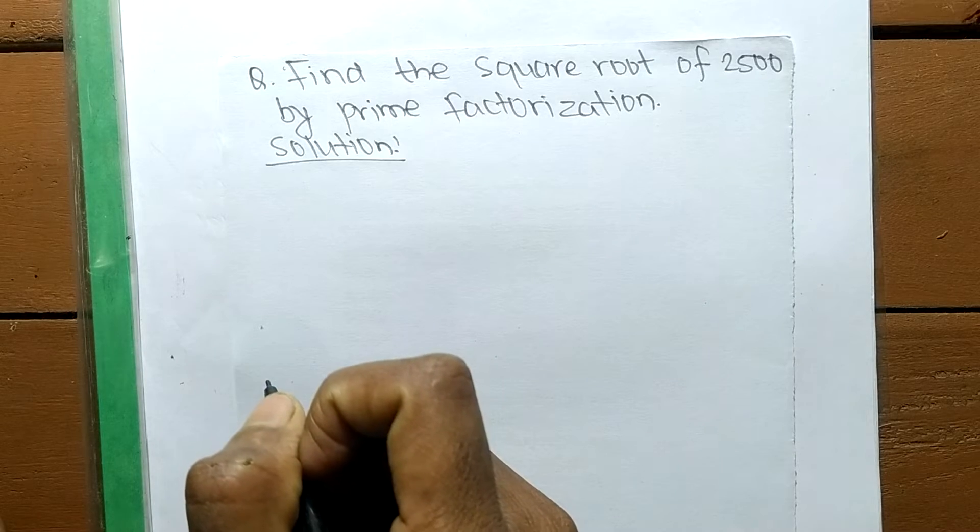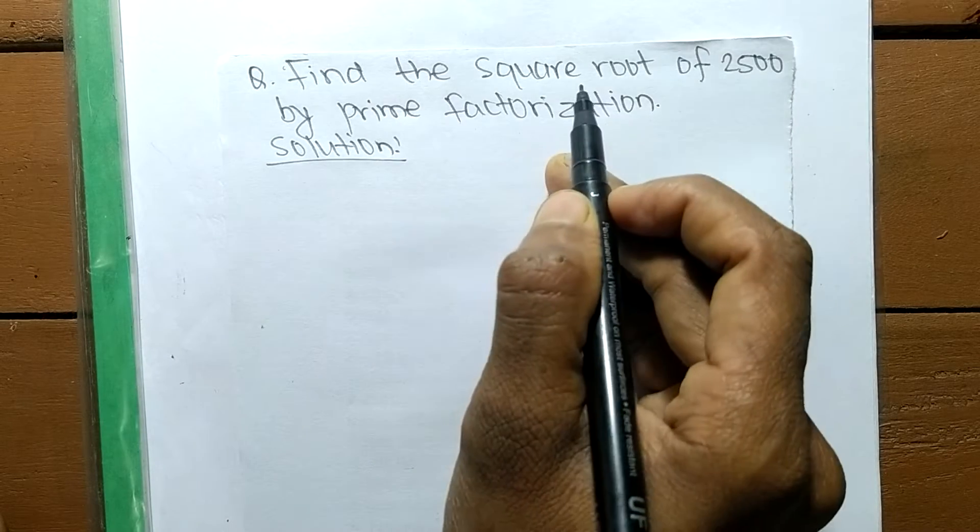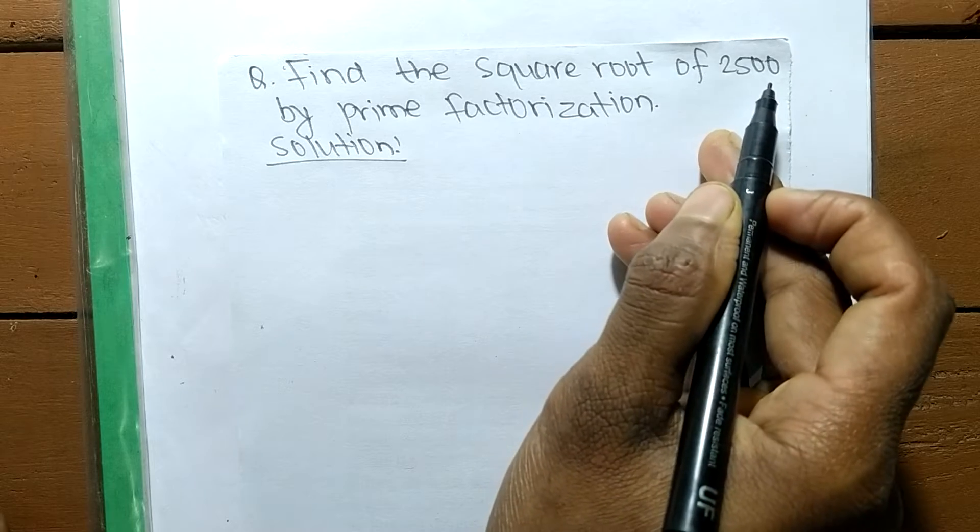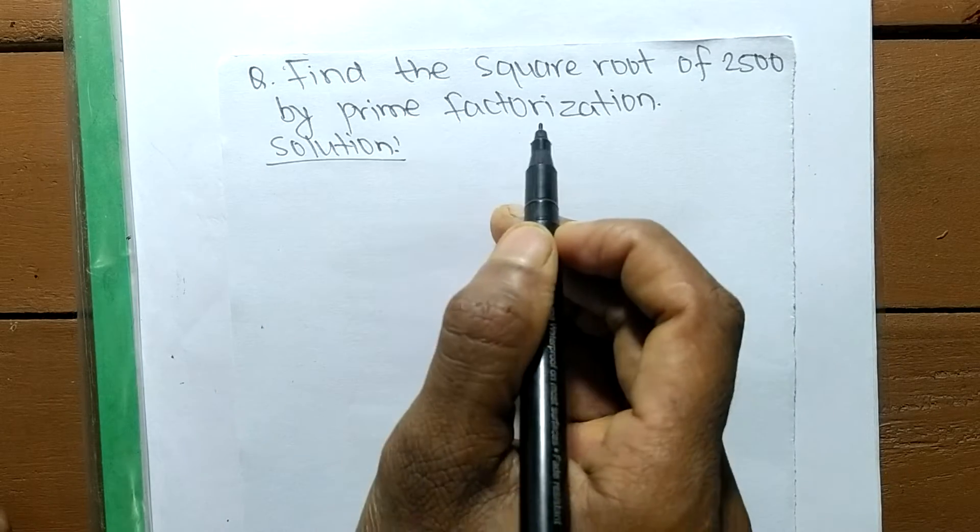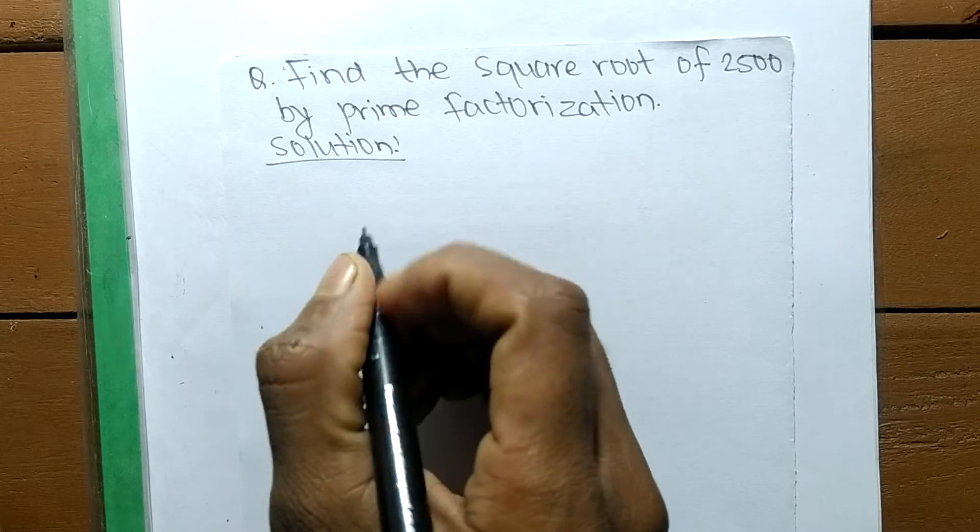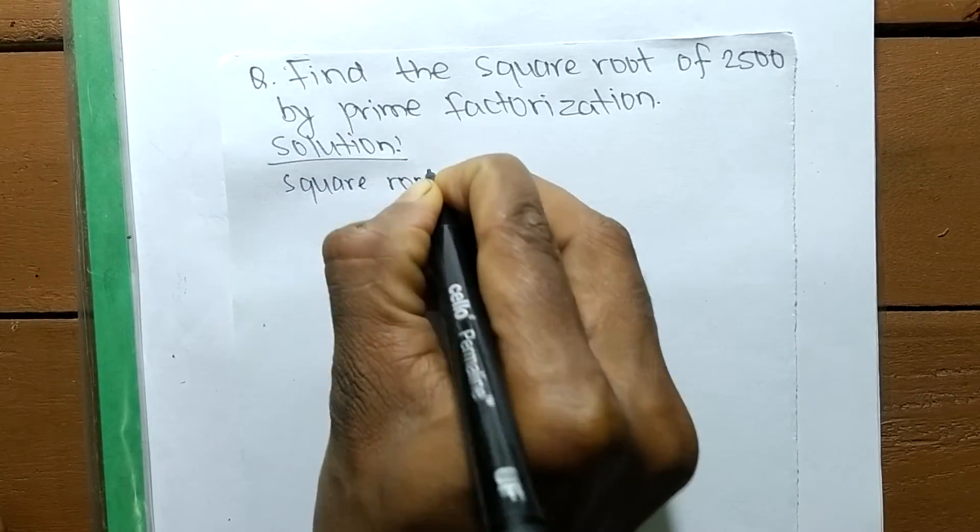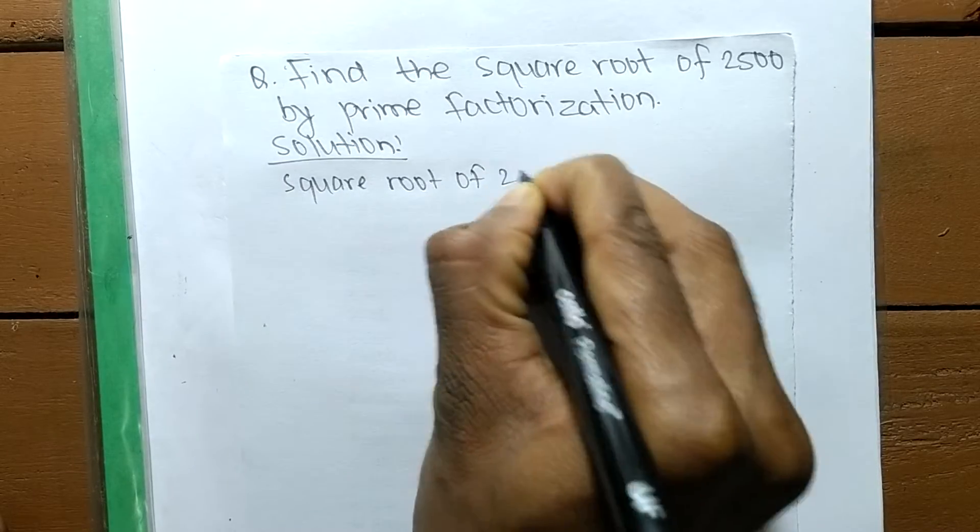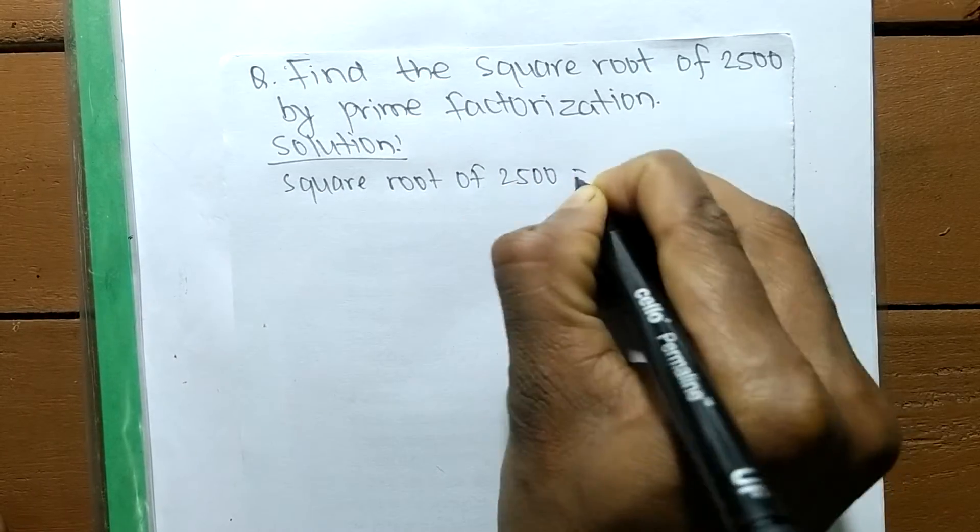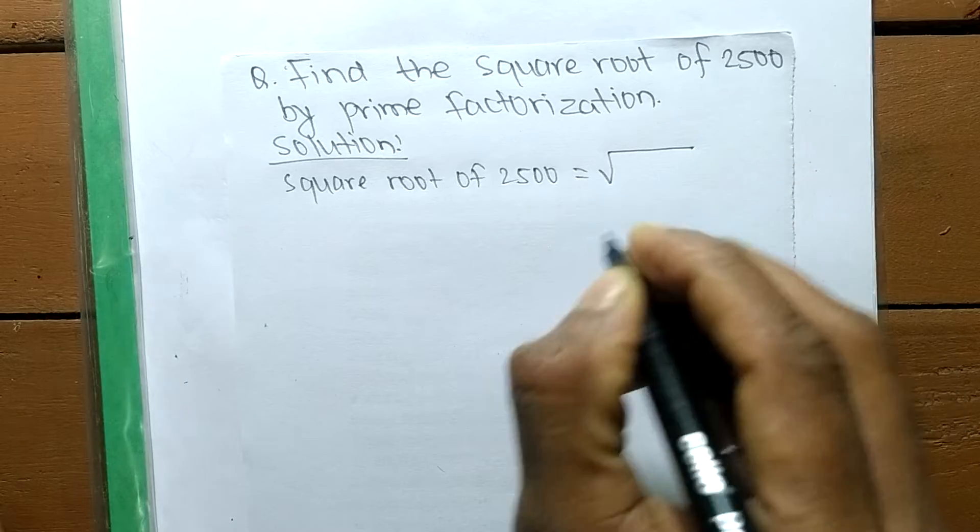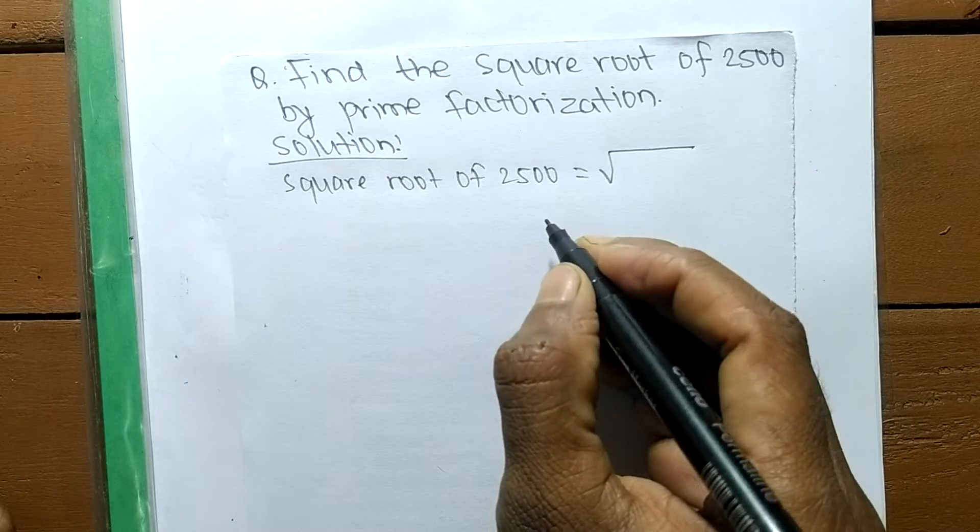Today in this video we will learn to find the square root of 2500 by prime factorization method. We have square root of 2500, denoted by the square root sign, and we are finding the square root of 2500.